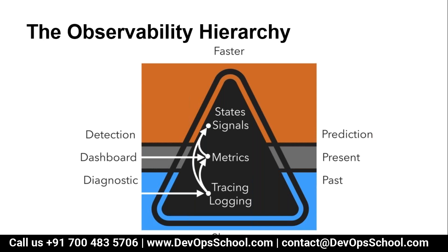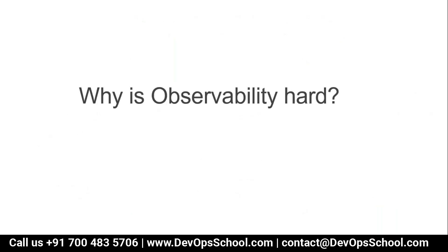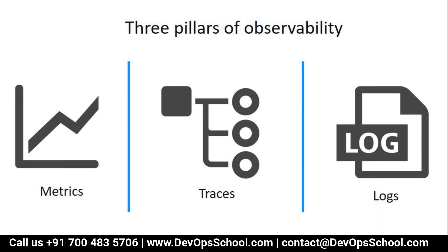The three pillars of observability are: metrics (infrastructure monitoring), traces (APM — Application Performance Monitoring), and logs (log monitoring). These are the three pillars of observability.